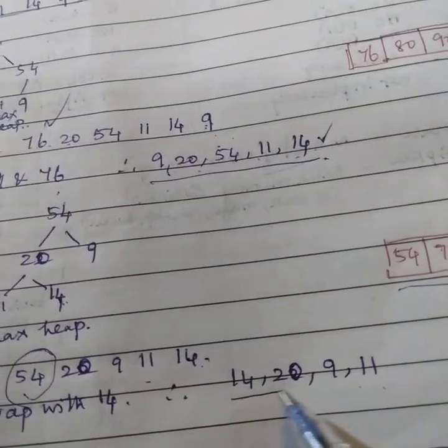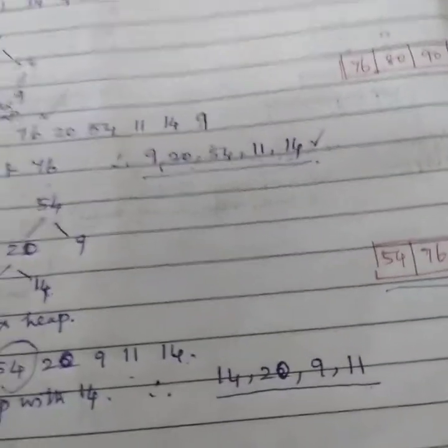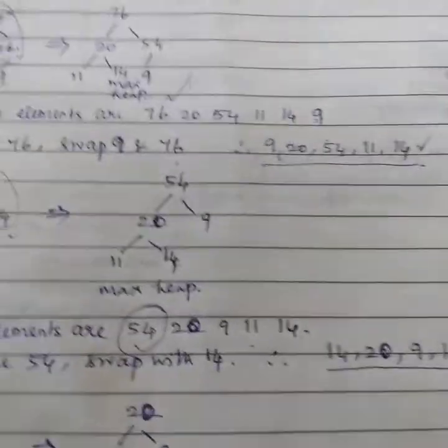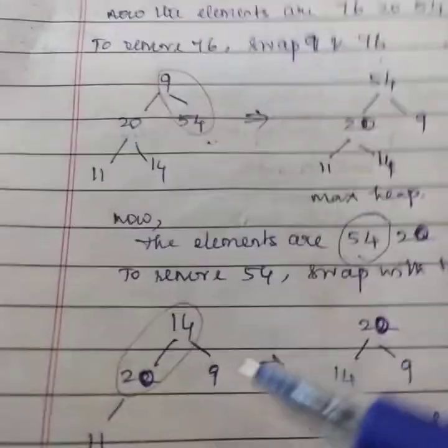So we need to draw again for these four elements, 14, 20, 9 and 11. So this is the max heap.